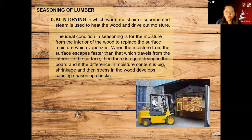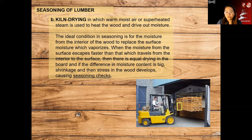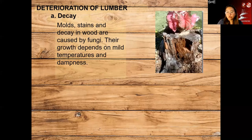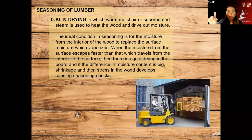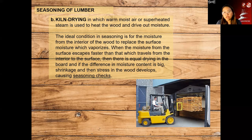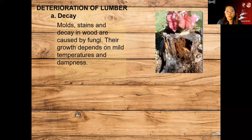There is also kiln drying, in which warm moist air or superheated steam is used to heat the wood and drive out the moisture. When you see 'KD' marked on an order, it means kiln dried. Extreme heat is used to dry the wood and reduce its moisture content.